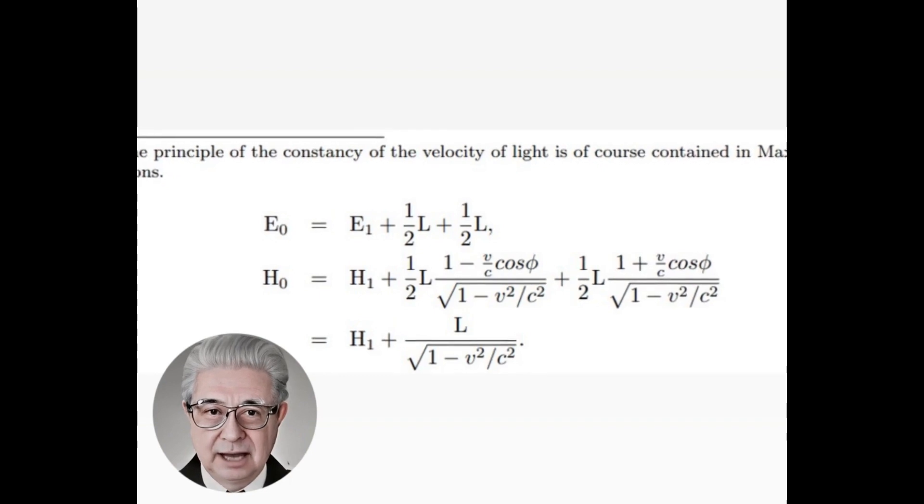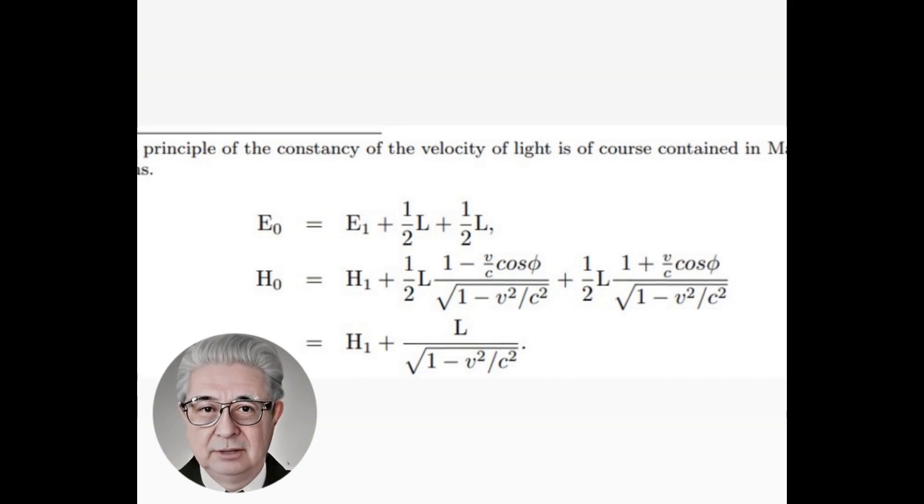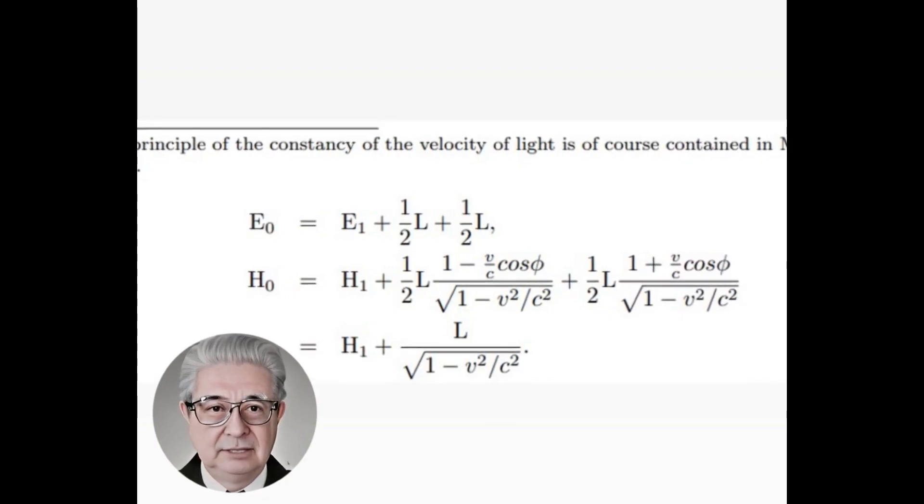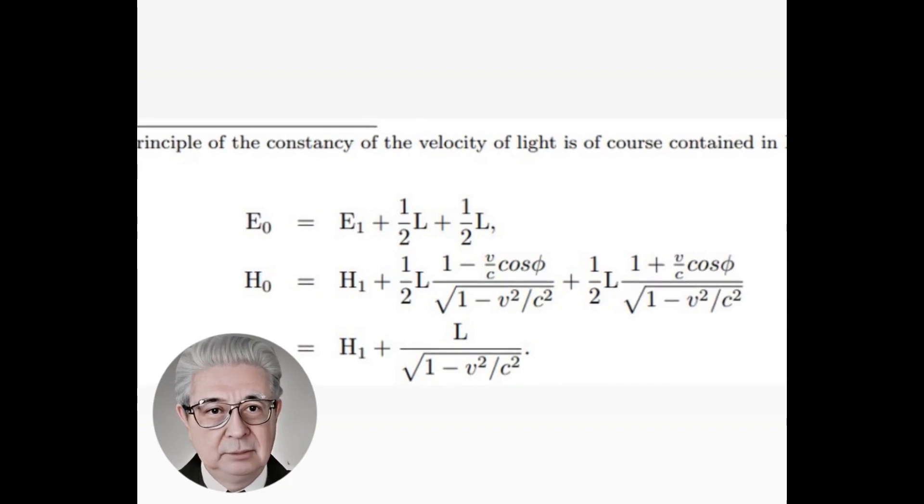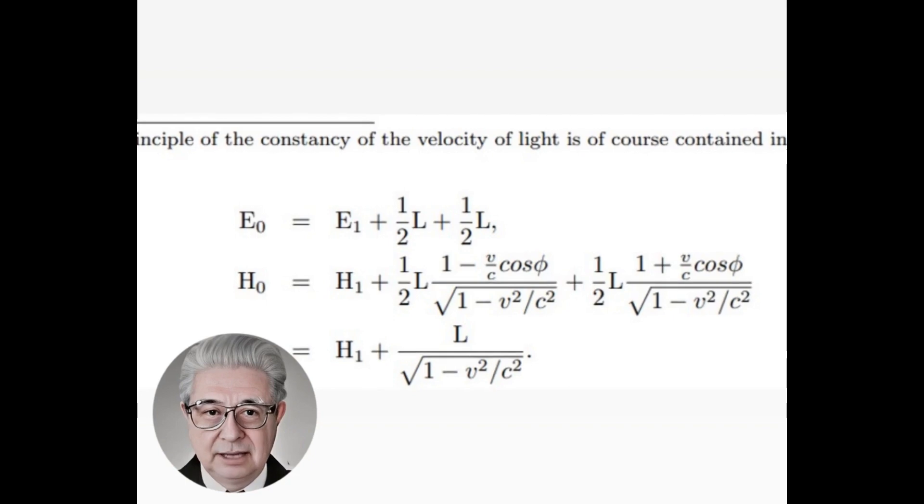He uses the theory of relativity and the relationship it provides between the two energies, A0 and H0, measured in the two different coordinate systems, to calculate the total energy of the body after the emission of light, A1 or H1, in each coordinate system.